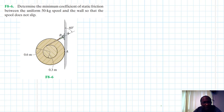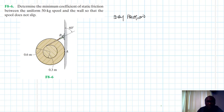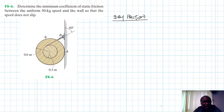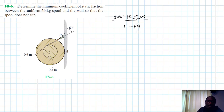We are dealing with dry friction — the force that resists the movement of two contacting surfaces that slide or move relative to each other. The maximum friction force is equal to mu, which is the coefficient of friction, times the normal force.